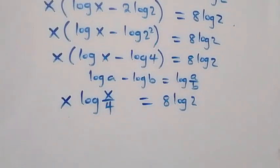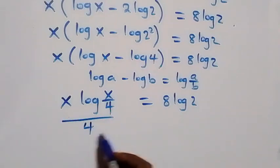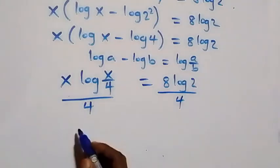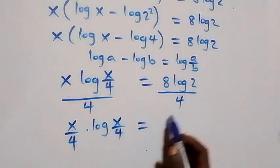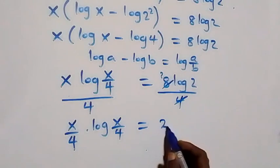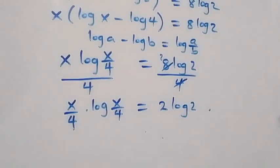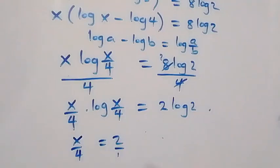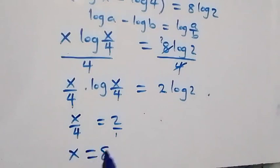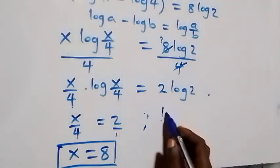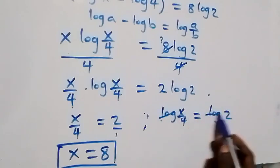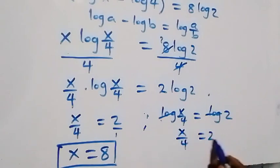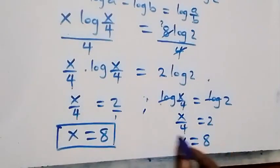From here, we divide both sides by 4. This gives us x over 4 times log of x over 4, equals 2 log 2. Comparing both sides, the coefficient is x over 4 and it equals 2, so cross multiplying implies x equals 8. Alternatively, we can say log of x over 4 equals log 2, the logs cancel, leaving x over 4 equals 2, so x equals 8 — the same result as the first method.